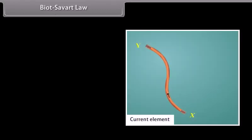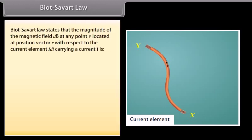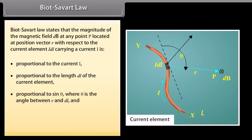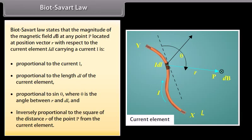Biot-Savart Law. It is a mathematical description of the magnetic field at a point that arises from a current flowing through a current element. The law states that the magnitude of the magnetic field dB at any point P located at position vector r with respect to the current element I·dl is: proportional to the length dl of the current element, proportional to sinθ where θ is the angle between r and dl, and inversely proportional to the square of the distance r from the current element.